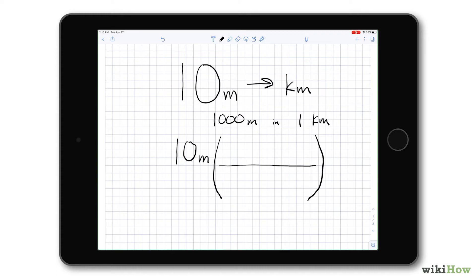Now what we want to have happen is for the meters to cancel out and then turn into kilometers. So next to the 10, because the meters is in the numerator, we're gonna put meters in the denominator such that they cancel. And then what do we want those meters to turn into? Kilometers. So we're gonna put that up top.